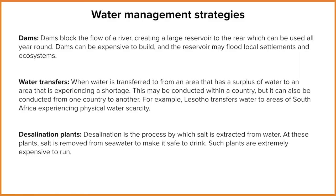Finally, we have desalination plants. This is where salt water is taken from the coast or sea, and electrolysis is used to remove the salt, making it safe drinking water. This might sound like a perfect solution to the world's water crisis; however, desalination is a very expensive process, and it also has a large carbon footprint because of the significant amount of energy required to produce safe water from salt water.